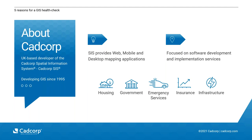CAD Corp are a UK-based software development company and we develop the Spatial Information System, CAD Corp 6. We've been building the CAD Corp 6 application for 25 years, and it provides web, mobile, and desktop-based mapping applications. We sell these across multiple different sectors — predominantly in the housing sector, local and central government, emergency services, and insurance and infrastructure. We focus on software development, always listening to the requirements of our users and developing the applications accordingly.